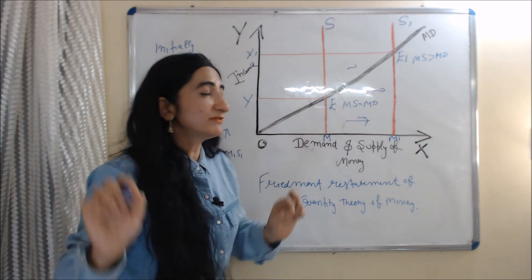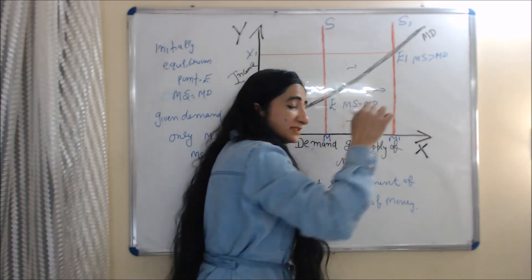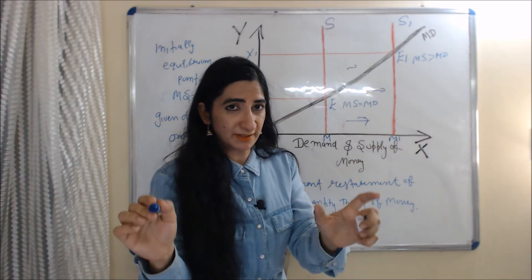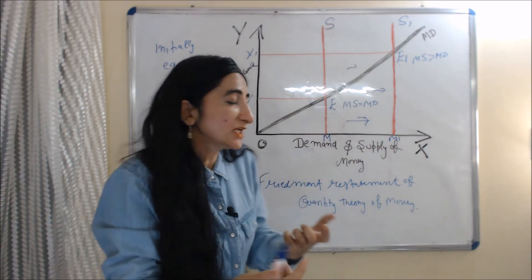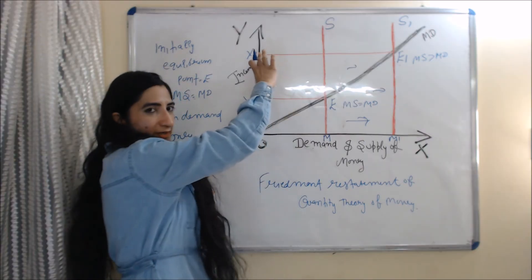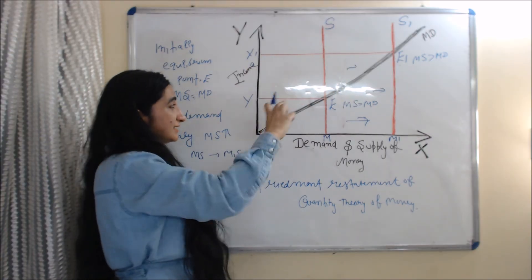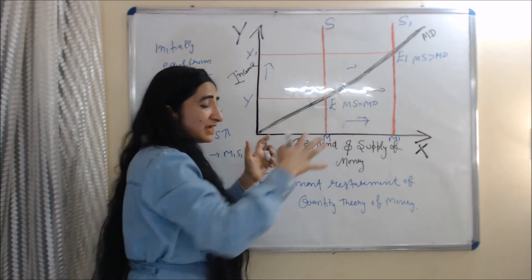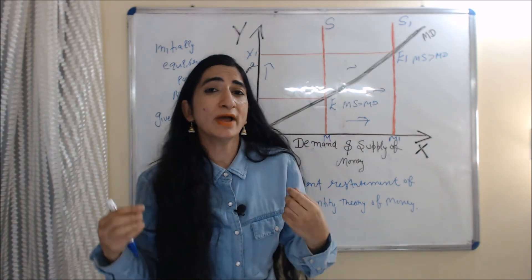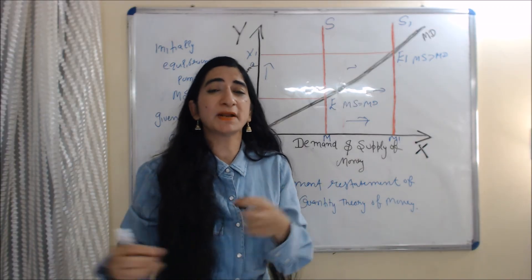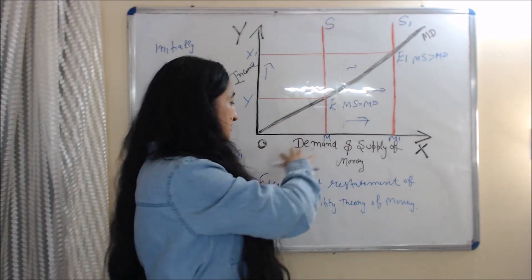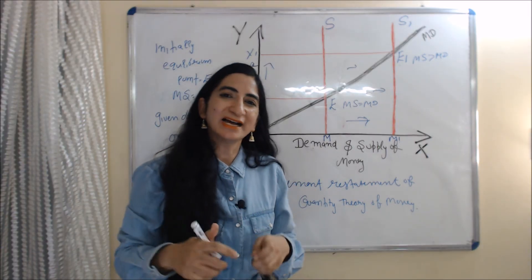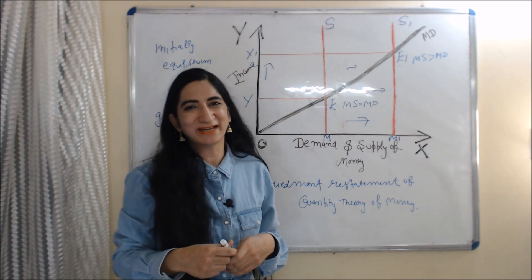We now have a new equilibrium point E1, where money supply is greater than money demand, and at this new equilibrium point our income also increased from OY to OY1. This diagram clearly shows how, at given money demand, only a change in money supply affects our income. This is all about Friedman's Restatement of Quantity Theory of Money. Thank you so much for watching.